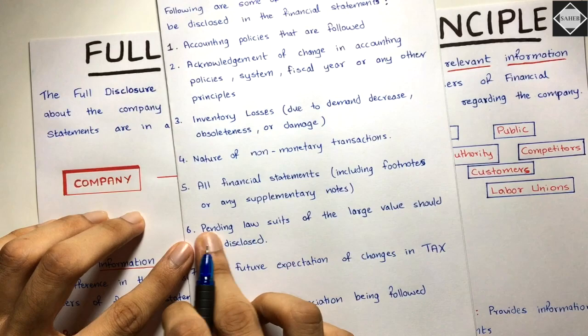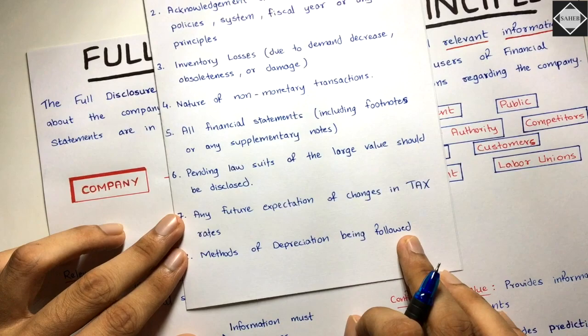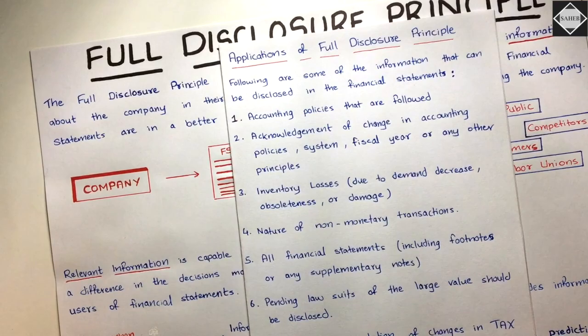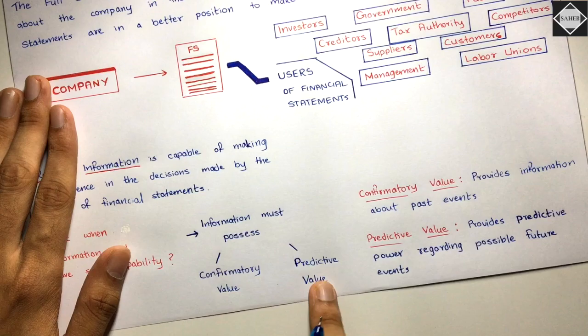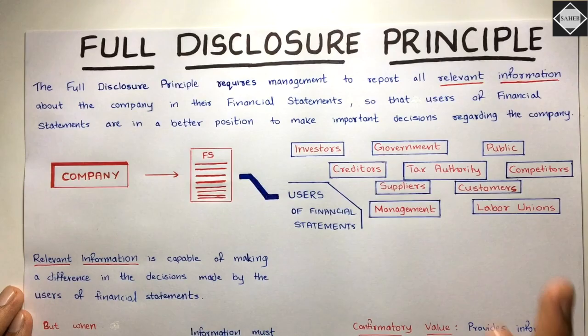Pending lawsuits of large value should be disclosed — as in the contingent liability example of 1 million. Also future expectations of changes in tax rates and methods of depreciation being followed. Whatever relevant information — any changes that happened over the year or anything new — if it has confirmatory or predictive value, it must be disclosed in the financial statements. That is what the full disclosure principle tells us. So that's it for this video, see you in the next one.